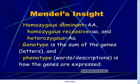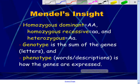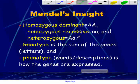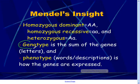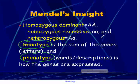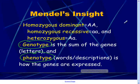So once again, homozygous dominant is capital A, capital A. Homozygous recessive is lowercase a, lowercase a. And heterozygous is capital A, lowercase a — one dominant and one recessive. In order to work Punnett square problems, you're going to need to know the word genotype and the word phenotype. Genotype is the genes or the letters. The phenotype is usually expressed in word form — it's a description of how the genes are expressed. Let's translate all these vocabulary words into something we can use.